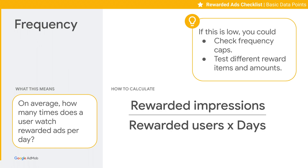The third basic data point is Frequency. This metric tells you, on average, how many times a user watches Rewarded Ads per day. If this is low, you could check Frequency Caps and test different Rewarded items and amounts to make your rewards more attractive to users so they are more likely to watch Rewarded Videos again.